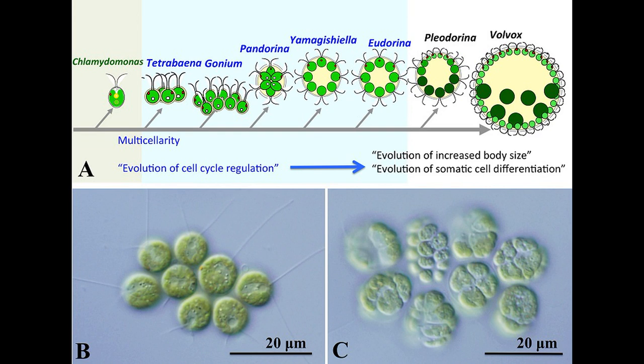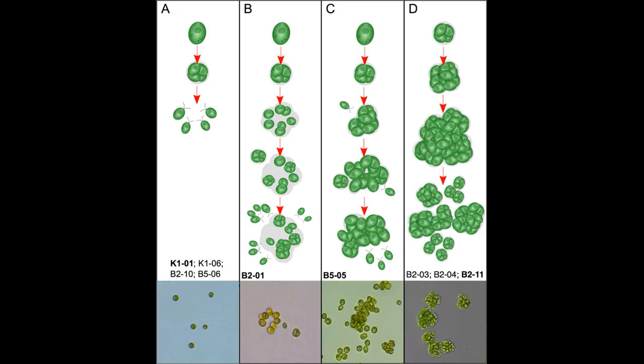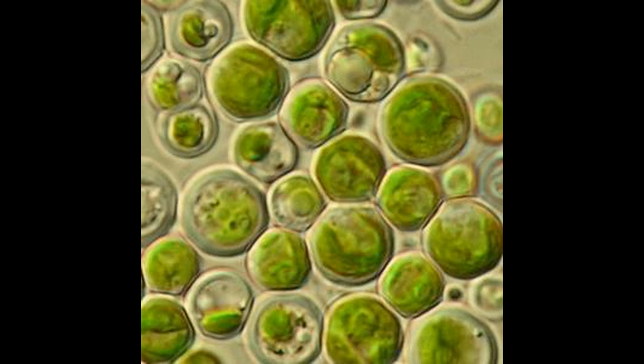Chlamydomonas is unicellular, while Tetrabaena is a colony of four cells. Gonium lives in groups of up to 16 cells. Eudorina is a spheroidal colony of up to 32 cells. And Volvox is bona fide multicellular, containing up to thousands of cells, but only two cell types — somatic (non-reproducing) or germline (reproducing). That's about as simple as you can get for a true multicellular individual organism. And in 2019, Matthew Herron et al. published the results of a study where they subjected Chlamydomonas to predation by paramecium. After about 750 generations, the Chlamydomonas developed multicelled colonies that were too large to be eaten. Similar results have come from experiments with Chlorella vulgaris and Saccharomyces cerevisiae.